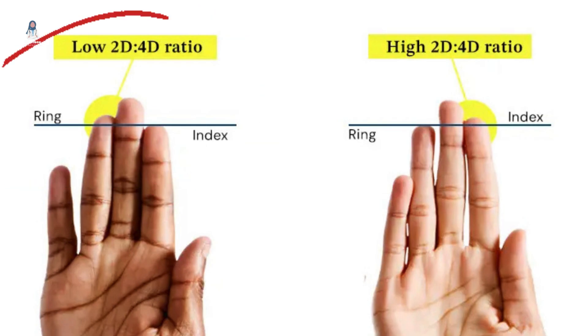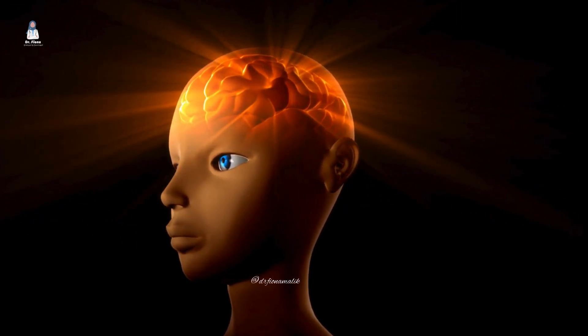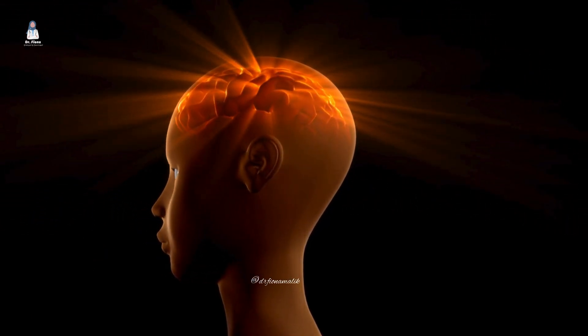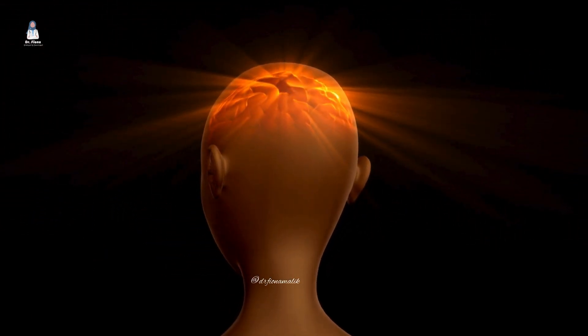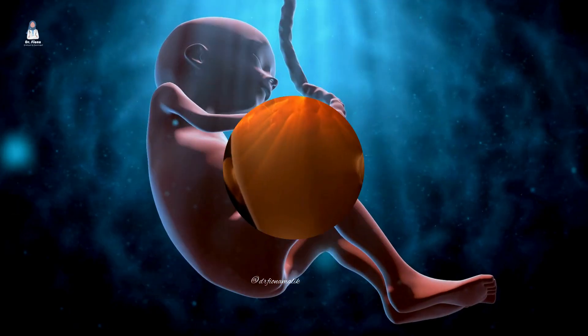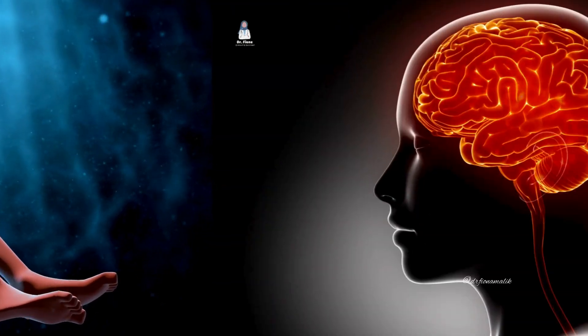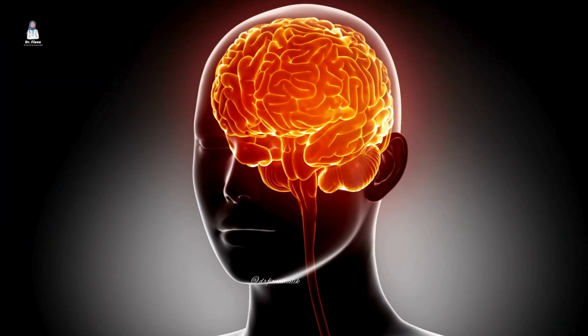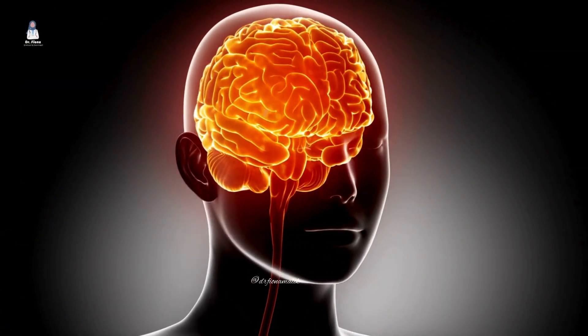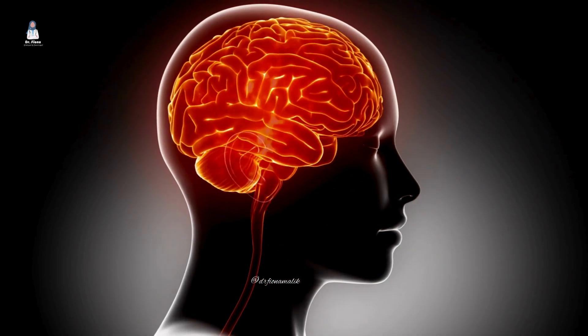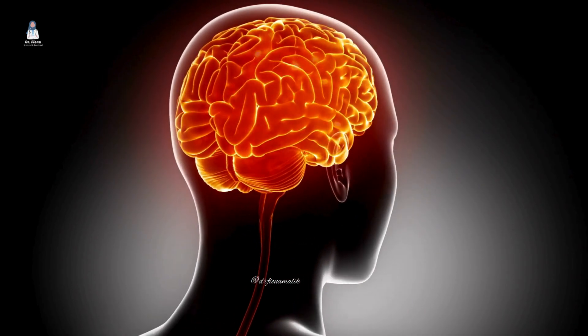Men with low 2D to 4D digit ratios are smarter than others with high 2D to 4D ratio. One explanation that I found in an article is that prenatal testosterone levels not only influence physical traits, but also shape brain structures. This allows these men to make quick decisions and take more risks, contributing to their overall success.